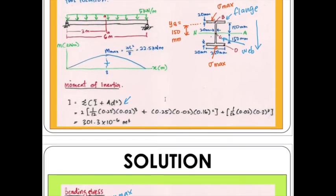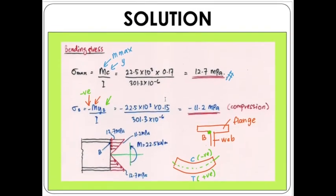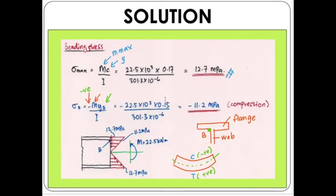Substituting y_B = 0.15 m into the equation, divided by the moment of inertia — which remains unchanged — we get the bending stress at point B equals negative 11.2 MPa, which is compression.